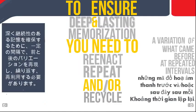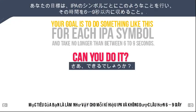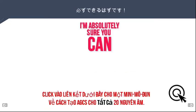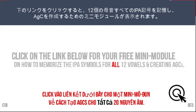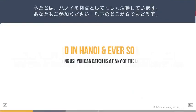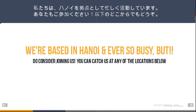To ensure deep and lasting memorization, you need to reenact, repeat, and recycle variations of the preceding at repeated intervals. Your goal is to do something like this for each IPA symbol and take no longer than between 6 and 9 seconds. Can you do it? I'm absolutely sure you can. Click on the link below for a mini module on memorizing the IPA symbols for all 12 vowels and creating AGCs. We're based in Hanoi and ever so busy, but do consider joining us. You can catch us at any of the locations below.